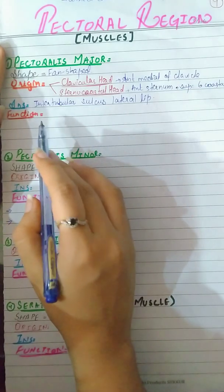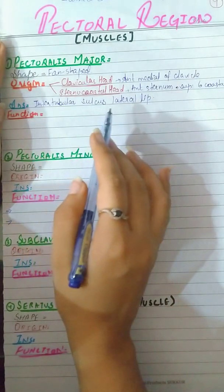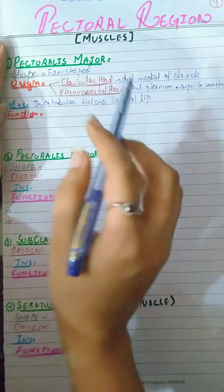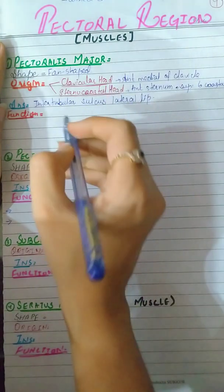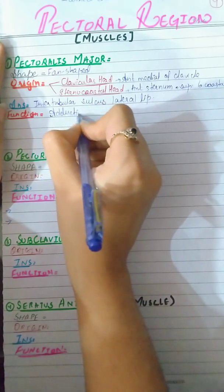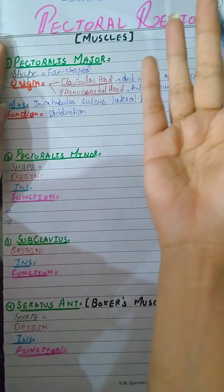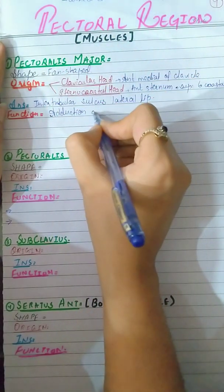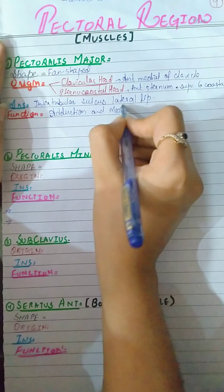Then we have its function. Its function is clear and easy: adduction and medial rotation. Because it's a chest wall muscle, it brings the arm or upper limb towards the chest.